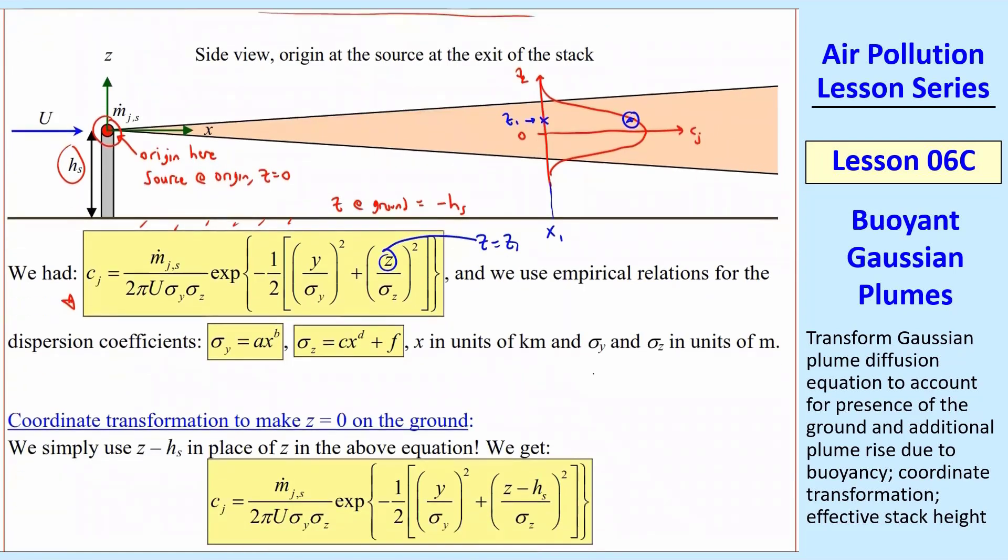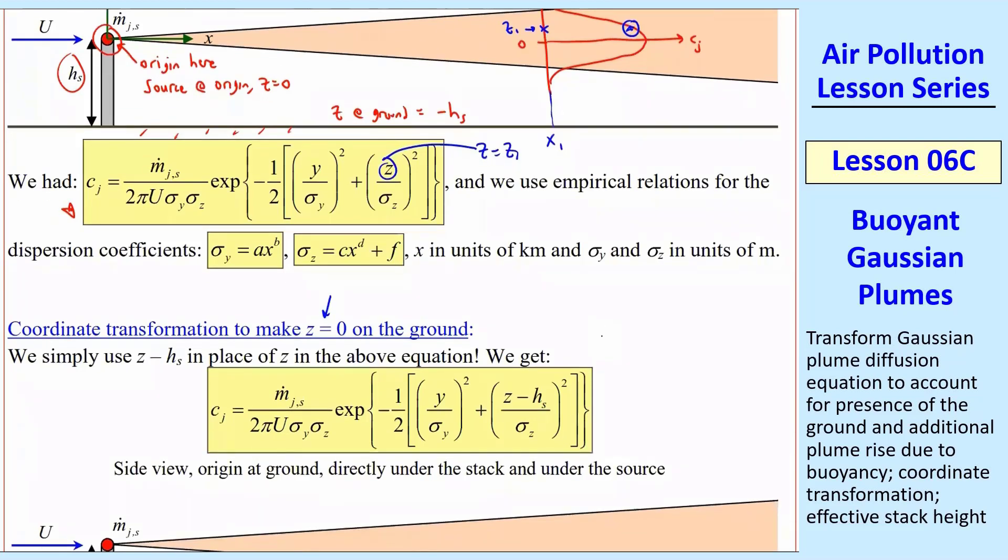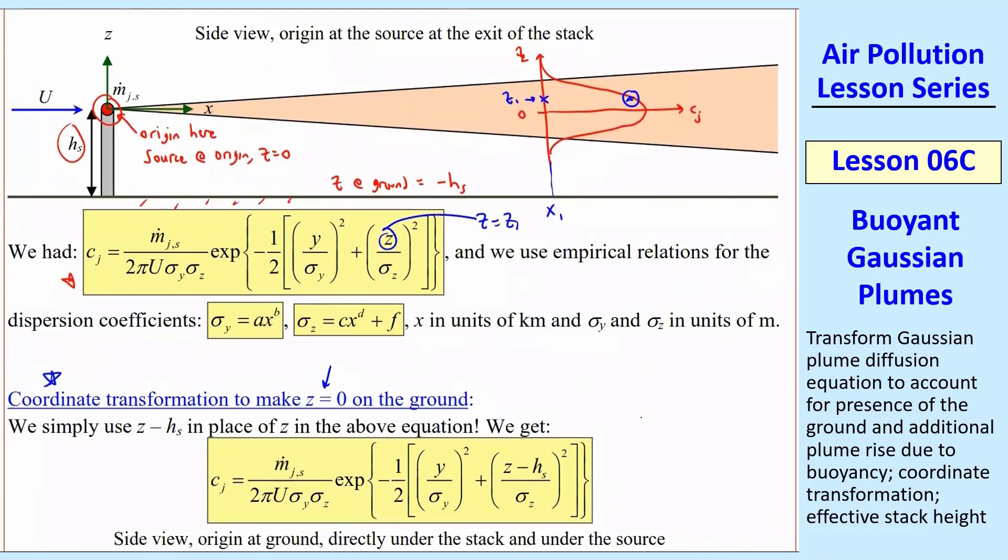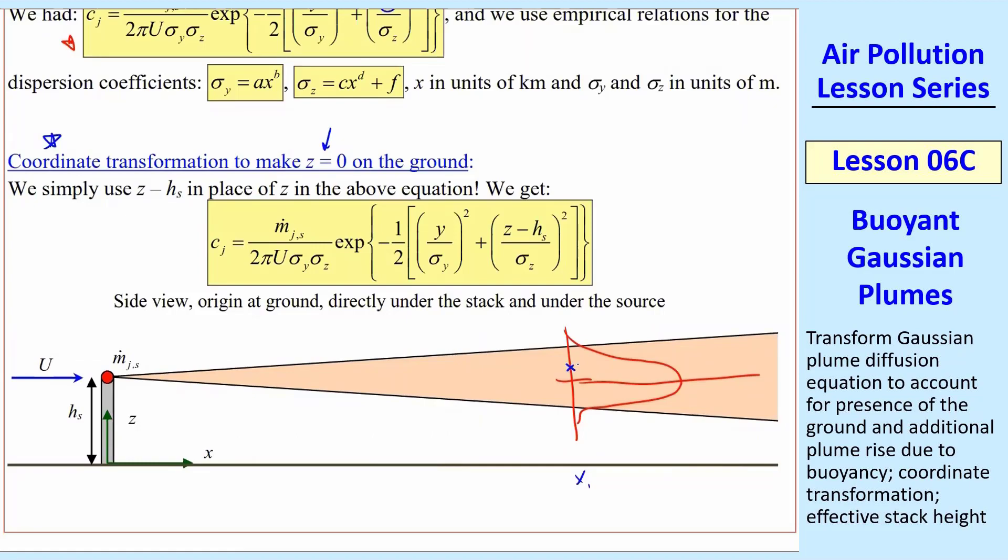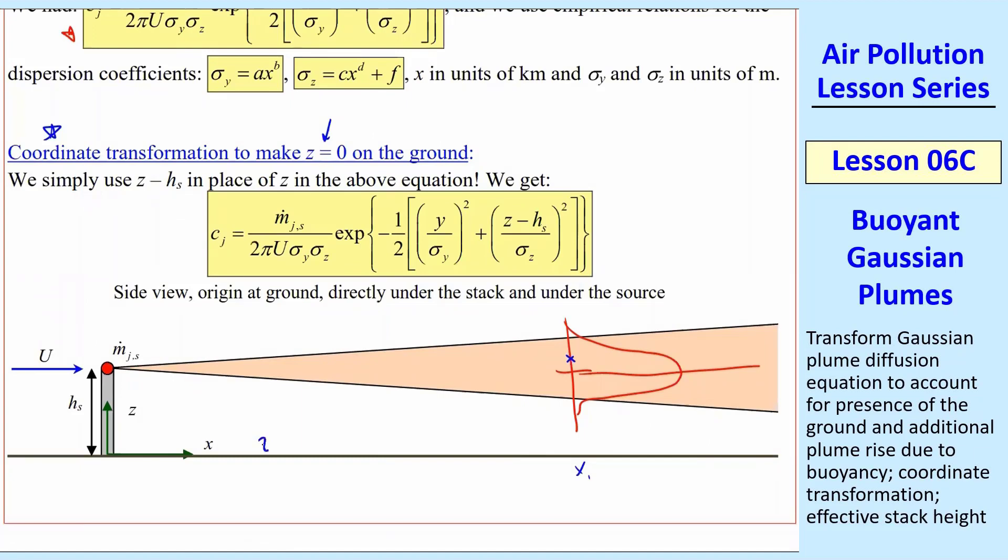So we're going to do a coordinate transformation. What we're going to do is make z equal 0 on the ground, because that makes more sense. From now on, we're going to be using z equals 0 on the ground. So this will be a simple coordinate transformation. We're going to redraw what I sketched up here at the same x1. We have some concentration now that looks the same as it did before. This is the center line.